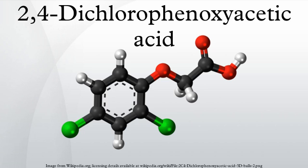Mode of action: 2,4-D is a synthetic auxin, which is a class of plant hormones. It is absorbed through the leaves and is translocated to the meristems of the plant. Uncontrolled, unsustainable growth ensues, causing stem curl-over, leaf withering, and eventual plant death. 2,4-D is typically applied as an amine salt, but more potent ester versions exist as well.